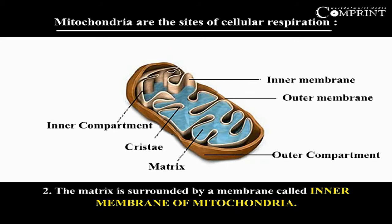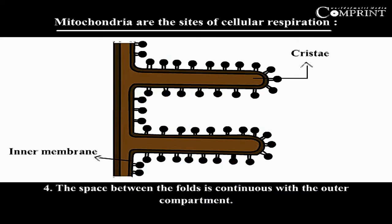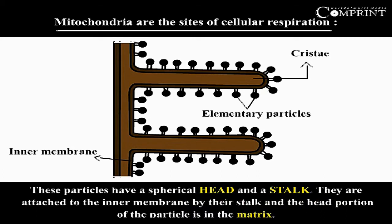The substance in the inner compartment is called the matrix. The matrix is surrounded by a membrane called the inner membrane of the mitochondria. The inner membrane is thrown into several folds called cristae, which extend into the matrix. The space between the folds is continuous with the outer compartment.